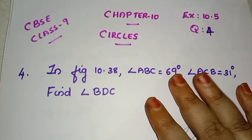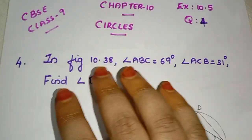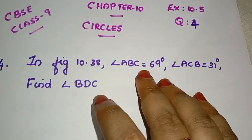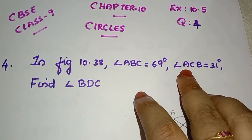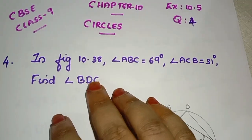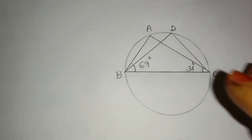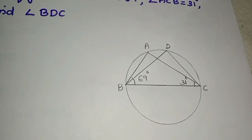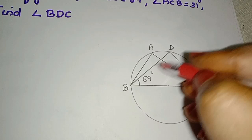Now we are going to study the figure. Angle ABC is equal to 69 degrees, angle ACB is equal to 31 degrees. Find angle BDC. Now we are going to study the figure and find angle BDC.